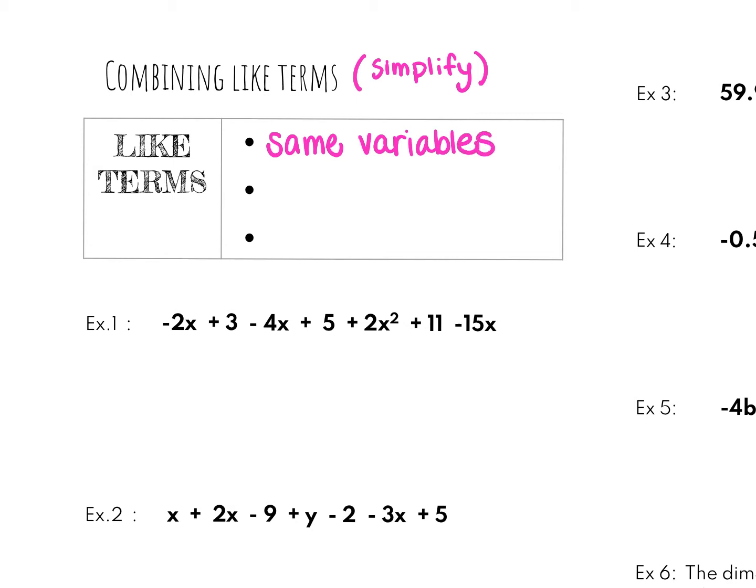So for example, in example number one, I am going to put a box around negative 2x. I want you to do the same thing. And what we're going to do is we're going to look for all of the same variables here. So I'm also going to put a box around negative 4x or minus 4x. Negative and minus we can think of as the same. Last but not least, I am going to put a box around 15x. So I have found three terms in this expression that have the same variables.